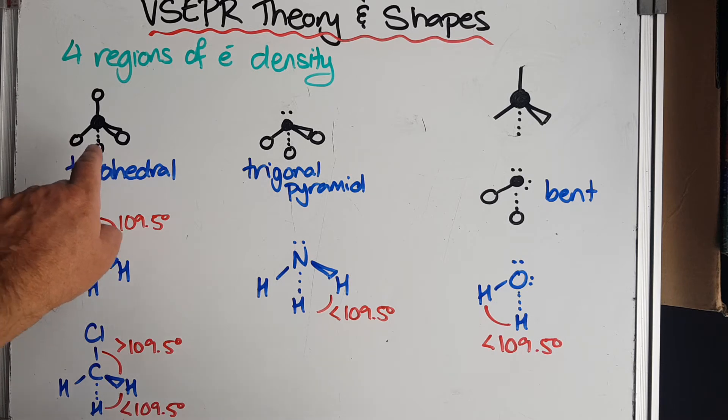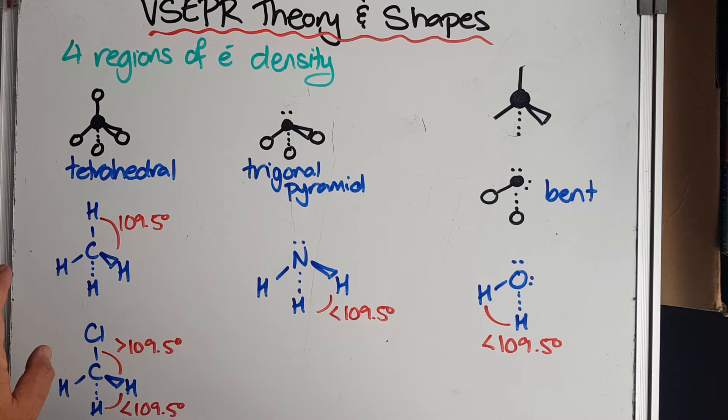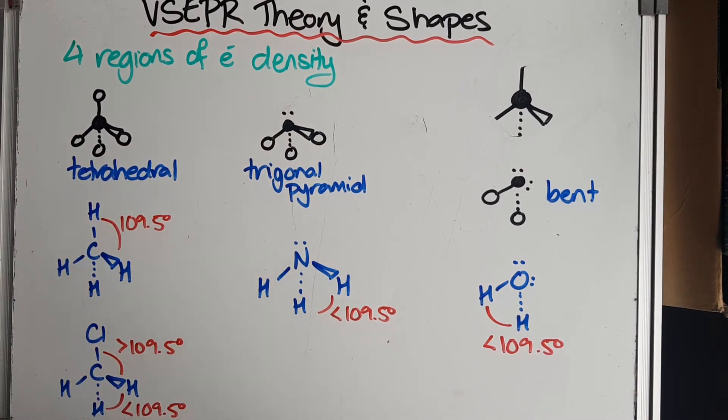Where each of these regions of electron density is a bonding pair. So if they're all bonding pairs, then you'd expect the bond angle to be 109.5. And if the atoms are all identical, that is true.